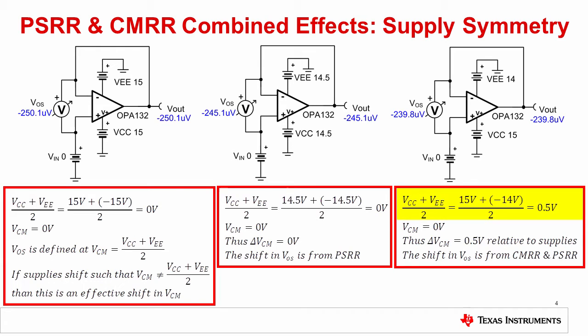In the third case, VEE is shifted to 14 volts, but VCC is maintained at 15 volts. The average supply voltage is now 0.5 volts, and the common mode voltage with respect to ground is still 0 volts. This constitutes a change of 0.5 volts in the common mode voltage, which introduces a common mode error, as well as a power supply rejection error.